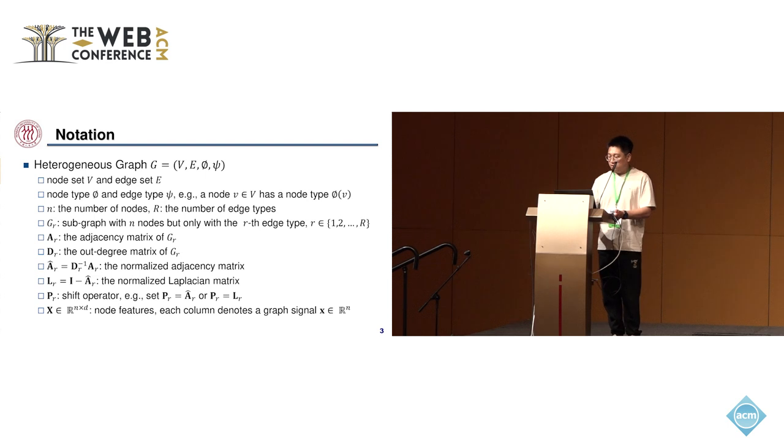Then we use the lower case n to denote the number of nodes, and the upper case R to denote the number of edge types.